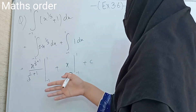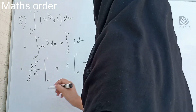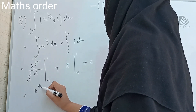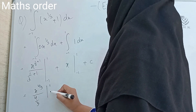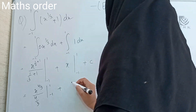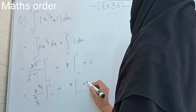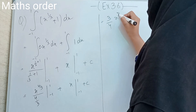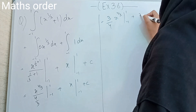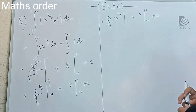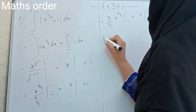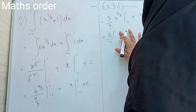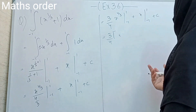After applying the definite integral method, we get x^(4/3) divided by (4/3), evaluated from minus 1 to 1, plus x evaluated from minus 1 to 1. This simplifies to (3/4) x^(4/3) from minus 1 to 1, plus x from minus 1 to 1.